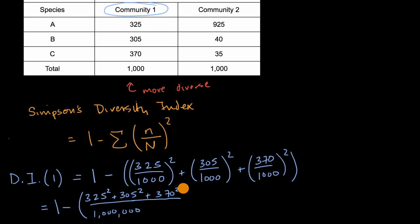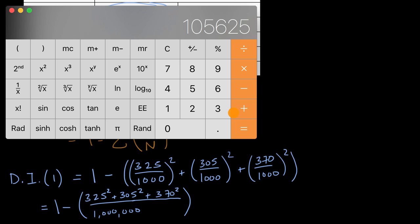And that is going to give us 325 squared, plus 370 squared, is equal to that. That's the numerator here, and I'm going to divide that by a million. Divided by 1, 1, 2, 3, 1, 2, 3, and that is a million. It equals this.